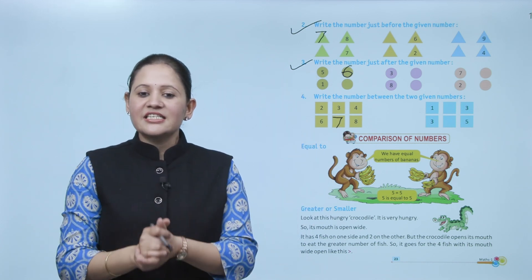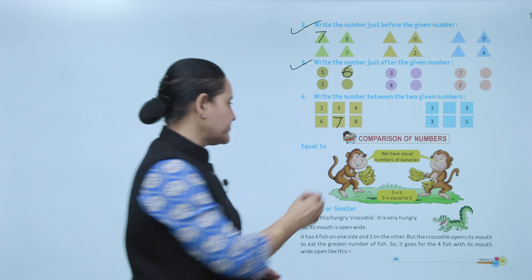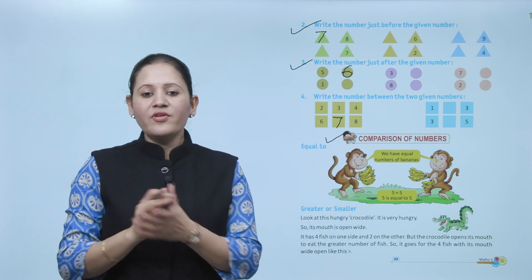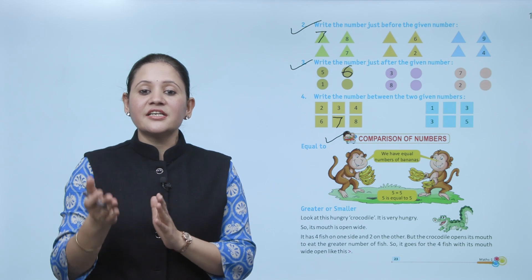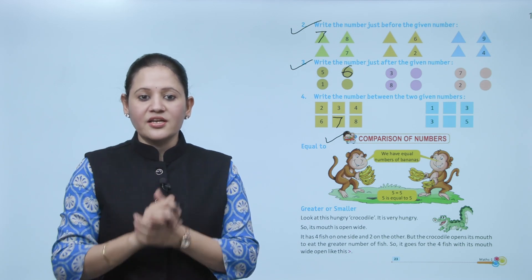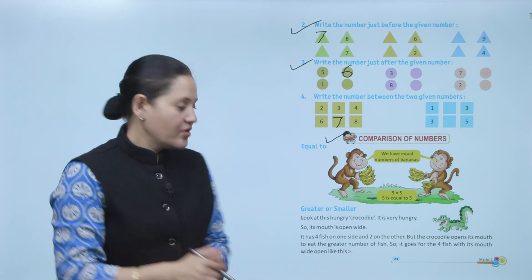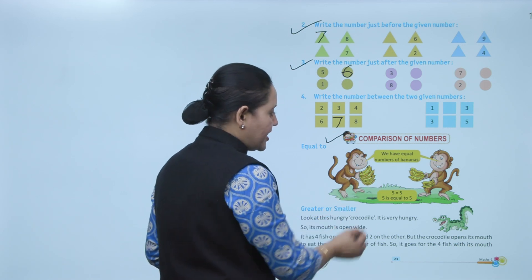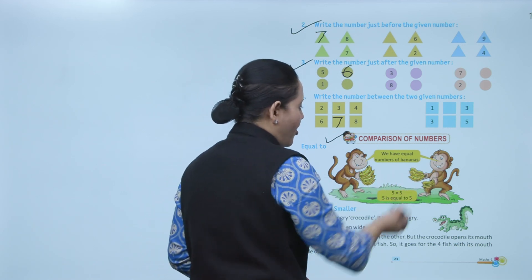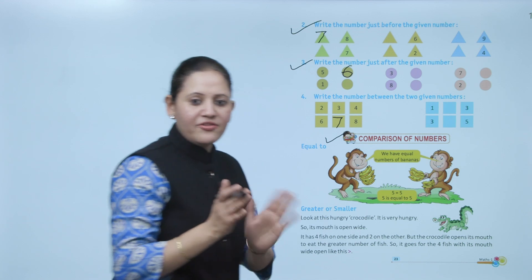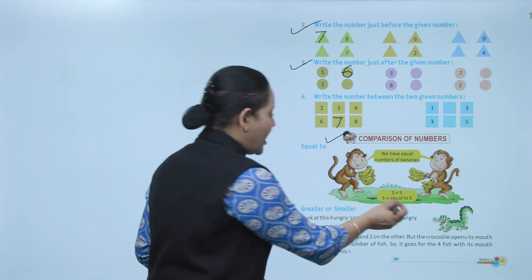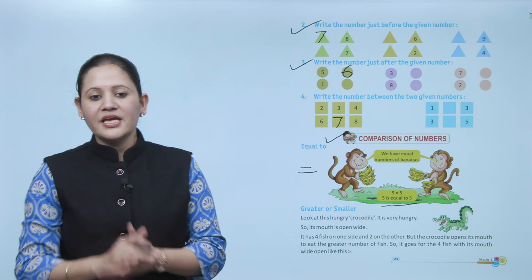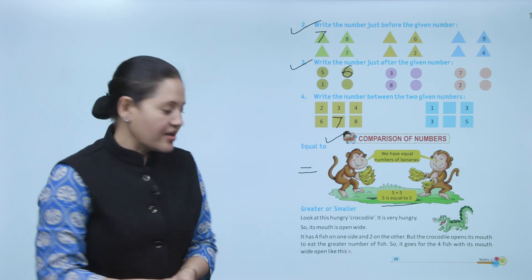Next: comparison of numbers. How will you compare which number is greater? Here, equal — this monkey has five bananas and it also has five bananas, so they have an equal number: five equals five. This is the sign of equal. Next: greater or smaller.